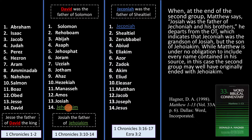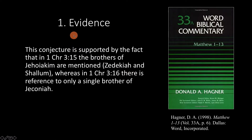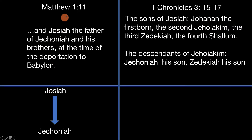I think this is evidence enough that the original copy of Matthew probably looked something like this. But Hagner goes on to present two pieces of evidence that strengthen this position. The first piece of evidence: in Matthew 1:11, we're told 'And Josiah, the father of Jeconiah, and his brothers' — plural, brothers. Matthew is saying that Jeconiah has multiple brothers.